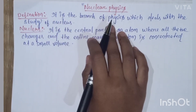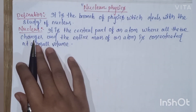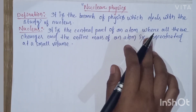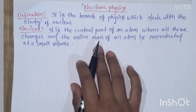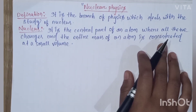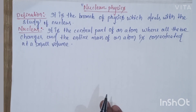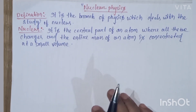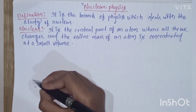In this chapter, we will study more about the nucleus. The nucleus is the central part of an atom where all the positive charges and almost the entire mass of an atom are concentrated at a small volume. We will study the constituents of the nucleus, its size, its shape, its radius, and its volume.